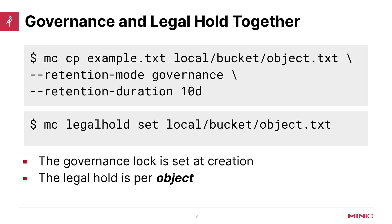If you want to set governance and a legal hold together, note that it takes two different commands because the two locks are managed separately. The governance hold uses mc retention set, changing compliance to governance. Notice the governance lock is set across the entire bucket. When you want to set your legal hold, mc legal hold set requires a specific object and possibly a specific version. The legal hold is per object. This sets the legal hold on the latest version; you can use --versions to set it on all versions. The legal hold is a complement to the governance lock — after 90 days, if you wanted to delete something, you would still have to remove the legal hold first.